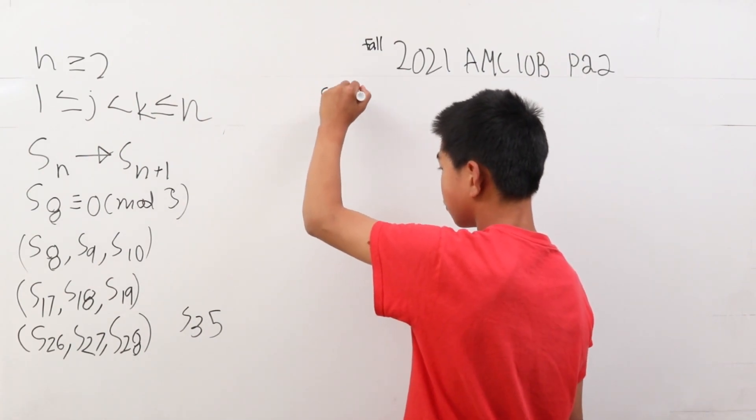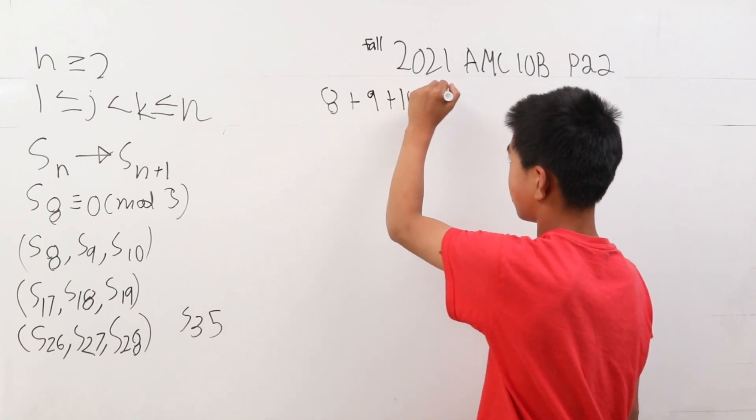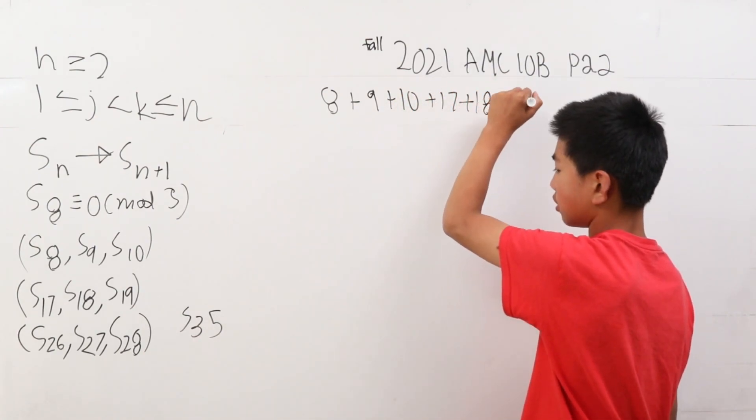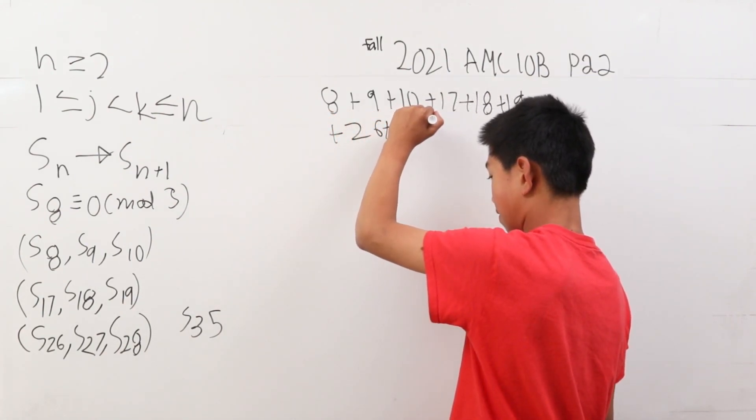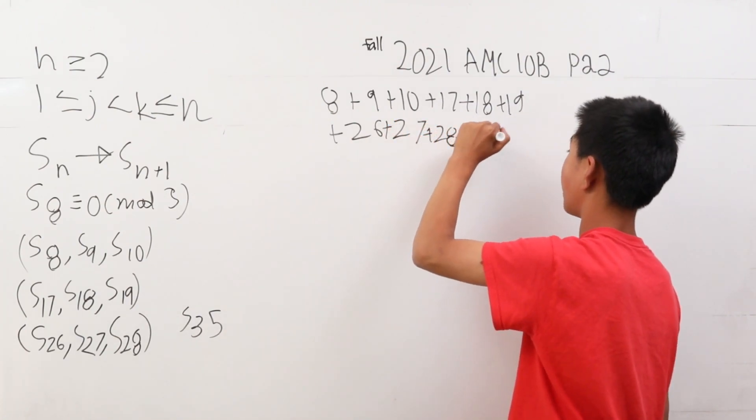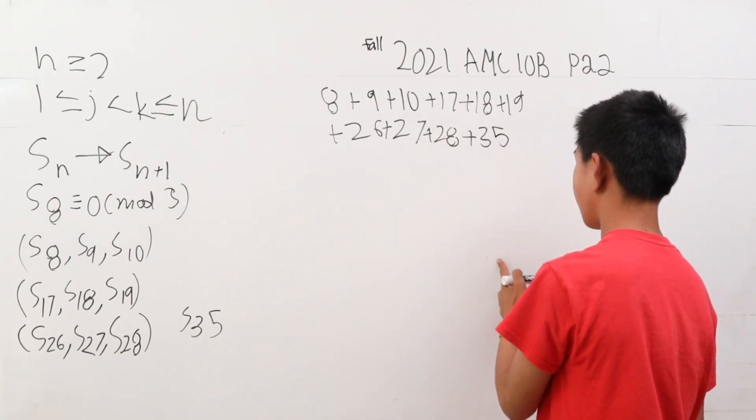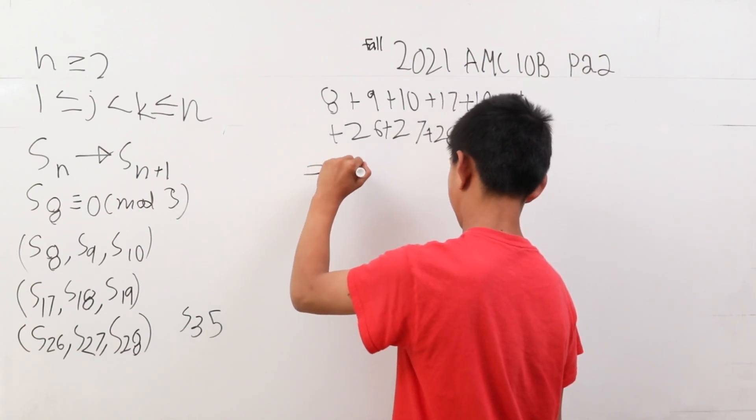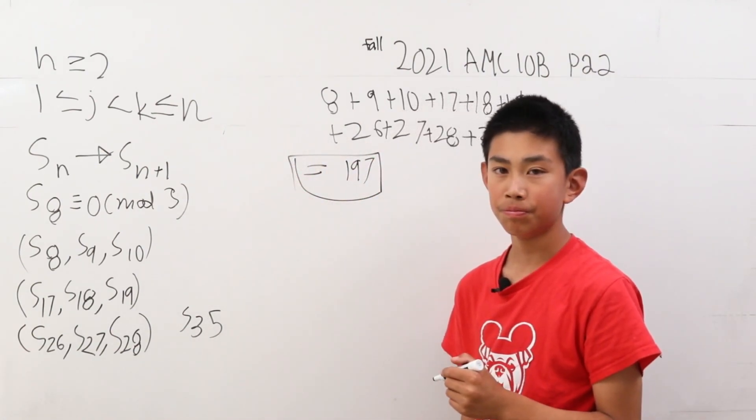8 plus 9 plus 10 plus 17 plus 18 plus 19 plus 26 plus 27 plus 28 plus 35. This sum is going to be our answer. And when you eventually solve for this, you get that our answer is 197. And we are done.